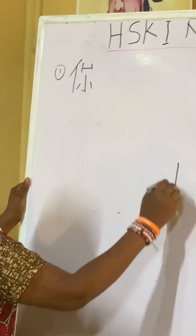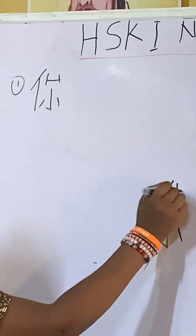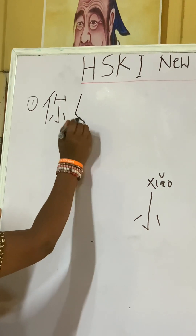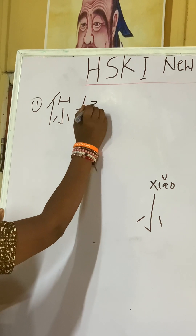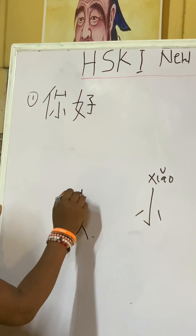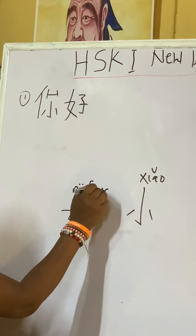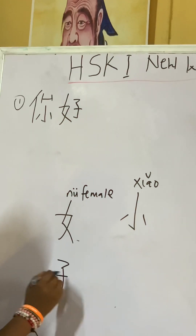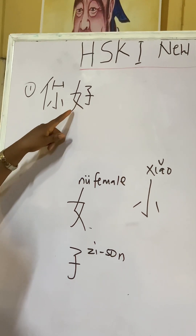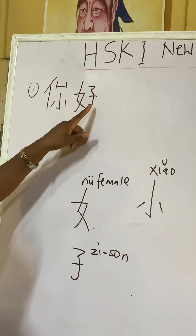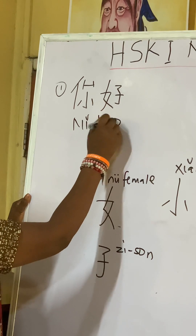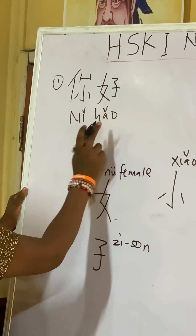So 小 (shall) means small. Now when writing 好 (hǎo), this is 女 (nǚ) which means female. And 子 (zǐ) means son. So how do they form this character? 女 (female) plus 子 (son) means good.